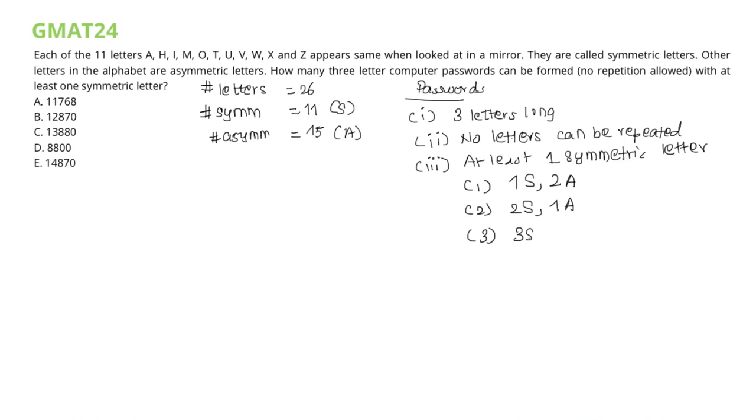Let us look at these cases individually. In the first case, we need to pick one symmetric letter and two asymmetric letters. One symmetric letter could be picked from a total of 11 symmetric letters in 11 C1 ways. Similarly, two asymmetric letters could be picked from 15 asymmetric letters in 15 C2 ways. Furthermore, the chosen letters could be rearranged among themselves in 3 factorial ways.